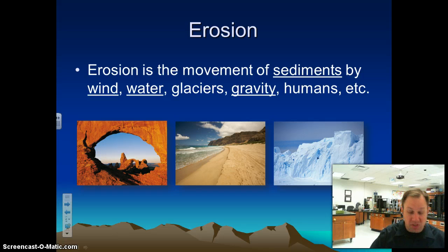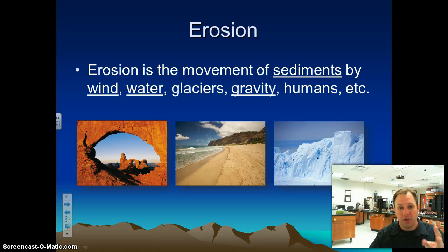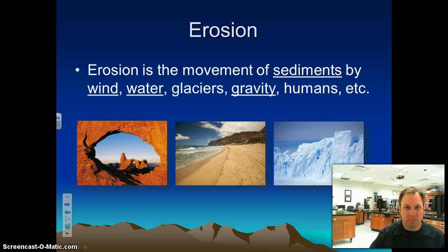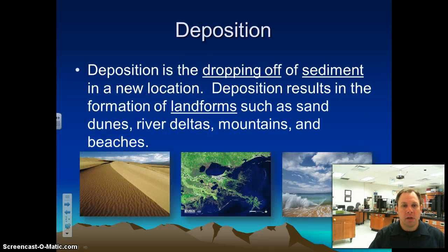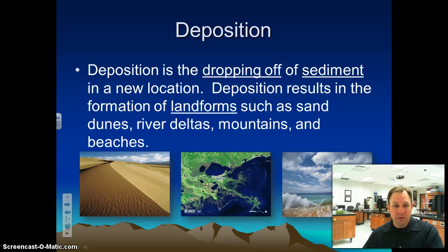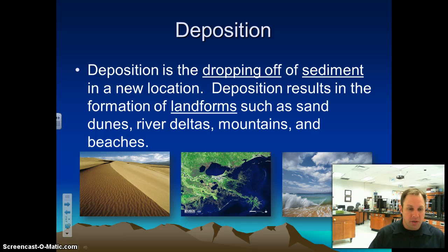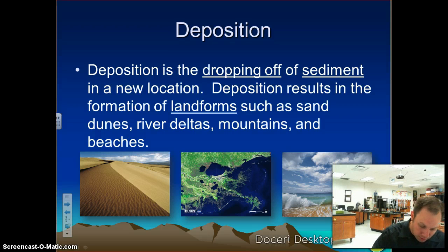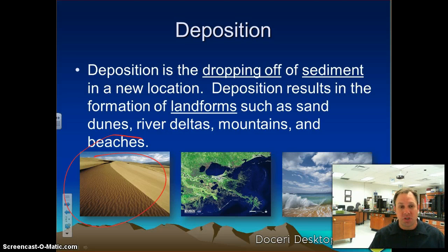Some examples of how erosion happens: wind carries sediment, water carries sediment, glaciers, gravity, humans move soil — we take big dump trucks and move it from one place to another. And then deposition is where you move the sediment and then drop it off in a new location. Sand dunes, for example, are where wind takes sand and blows it to a new location — that's deposition.